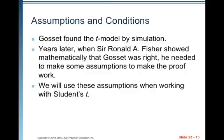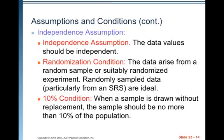Gossett found the t model by simulation. Years later, when Sir Ronald A. Fisher showed mathematically that Gossett was right, he needed to make some assumptions to make the proof work. We will use these assumptions when working with Student's t. The independence assumption states that the data values should be independent, and we can check this with the randomization condition — data arise from a random sample or suitably randomized experiment — and the 10% condition: when sampling without replacement, the sample should be no more than 10% of the population.